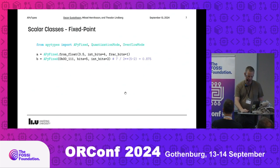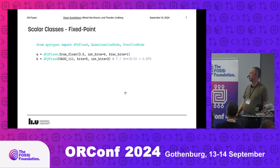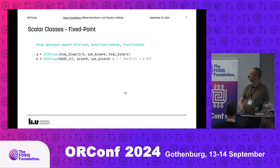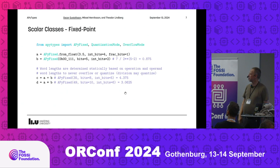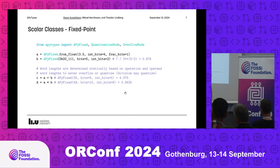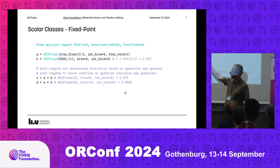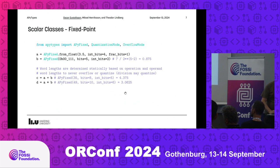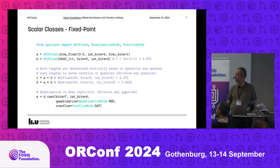We could create numbers from a float, from a binary representation, from strings, or a few other options. Once we do computations, we increase the word length — we will never overflow or quantize, except for division. For addition we add one integer bit; for multiplication we sum up the word lengths. In this way it will never quantize or overflow, and we need to explicitly cast. This is analogous to what you do in hardware: in VHDL when you multiply, the output length is the sum of the two input lengths.